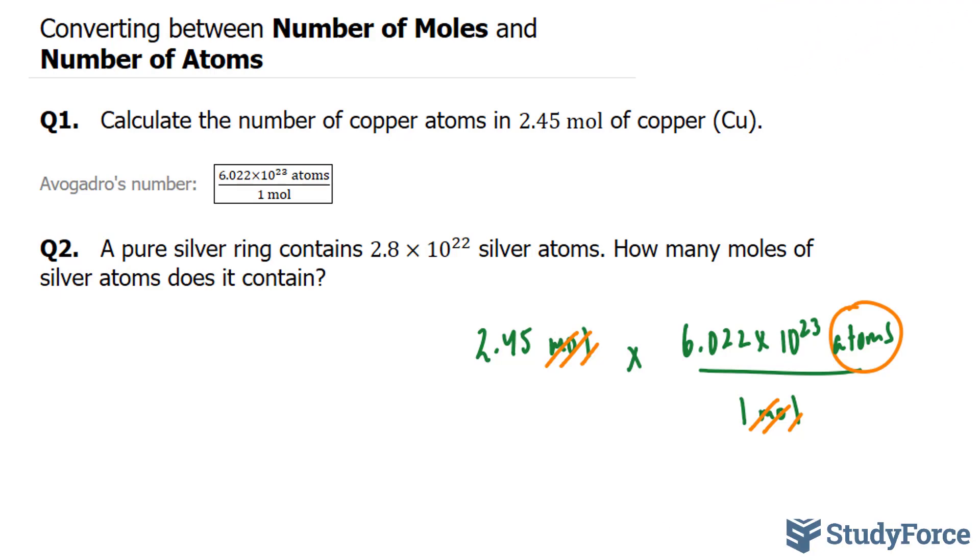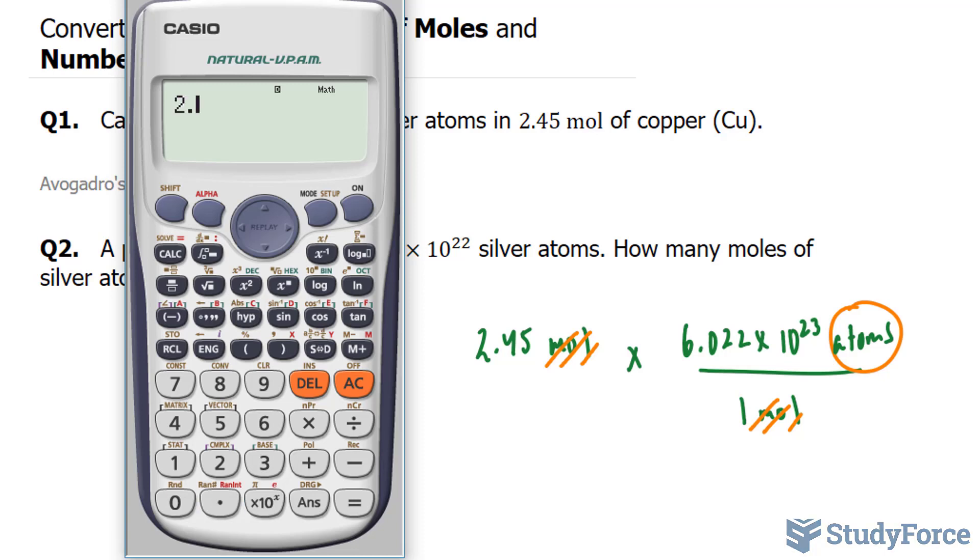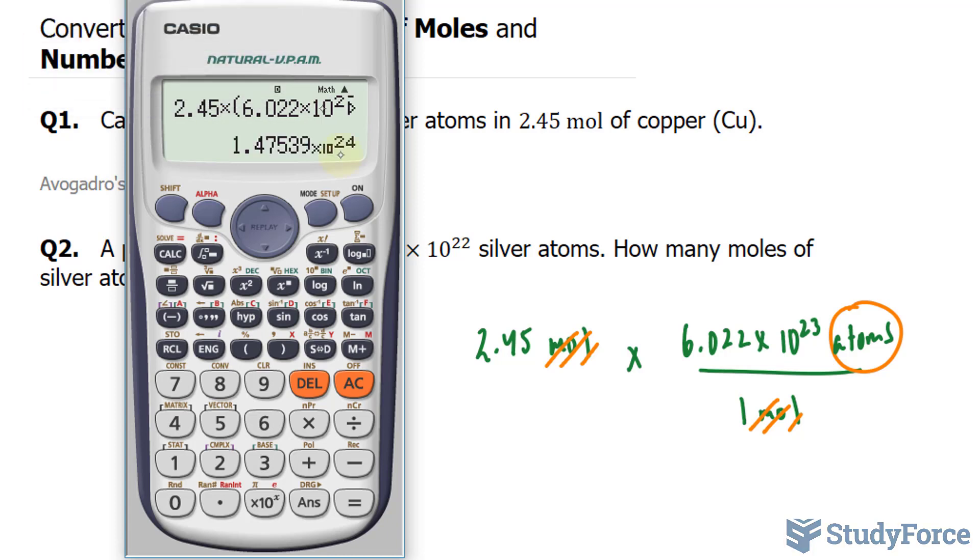Let's multiply these two numbers out and make sure that your final answer has three significant figures. So we have 2.45 times 6.022 times 10 to the power of 23. Notice what I did here. When I multiplied these two numbers, I put this number in brackets. You should do the same thing with your scientific calculator.